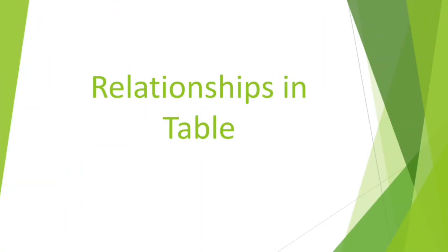Good morning everyone. Our today's topic is relationships in tables. We know that a database stores multiple tables which may be linked to each other. For example, in the context of a school database, there may be different tables like student details, marks details, and library details which may contain the details of the books issued and submitted and so on. All these tables are stored together in the same database. As tables of a database relate to the same context, they somehow store linked data.